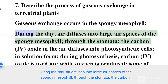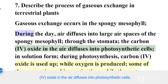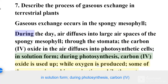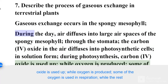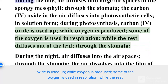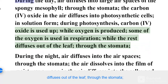During the day, air diffuses into large air spaces of the spongy mesophyll through the stomata. Carbon dioxide in the air diffuses into photosynthetic cells in solution form. During photosynthesis, carbon dioxide is used up while oxygen is produced. Some of the oxygen is used in respiration, while the rest diffuses out of the leaf through the stomata.